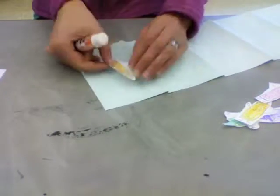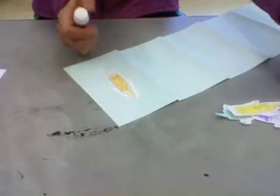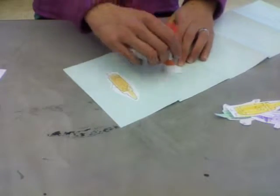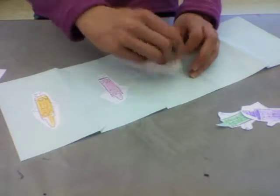So flip your crayon over, put some glue on the back and then really press it down to make sure it's stuck. Do the same for each crayon.